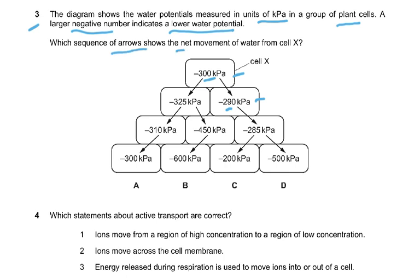The question asks which sequence of arrows shows the net movement of water from cell X. From −300, water moves to −325, then to −450, then to −600 — always from less negative to more negative. The answer is B. Option A is wrong because it shows water moving from −300 to −290, which is the wrong direction, since the larger negative number has the lower water potential.